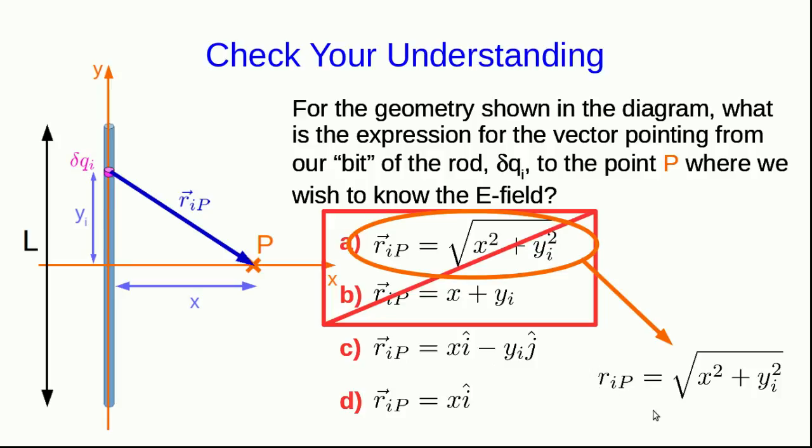Because remember, we don't just need the magnitude of r_IP, we also need one of its components. And so, the answer you can just read straight off the diagram, as is so often the case with vectors.